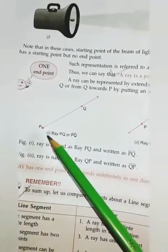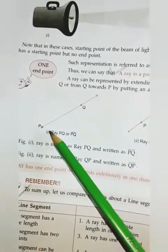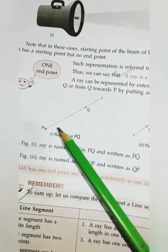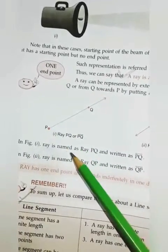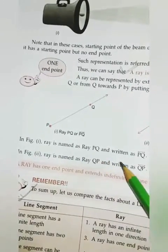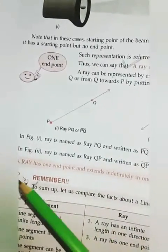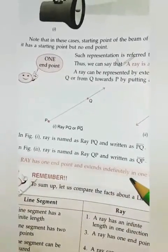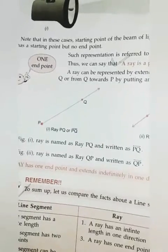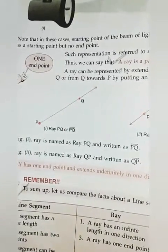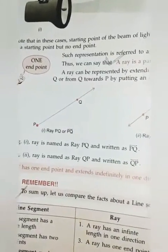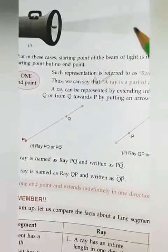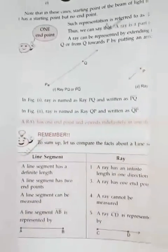Here, ray is starting. Here, P is the initial point or starting point. So in figure 1, ray is named as PQ ray or written as like this. A ray has one end point and extends indefinitely in one direction. Hence, it cannot be measured. For example, flashlight or ray of sun.